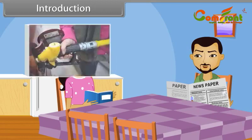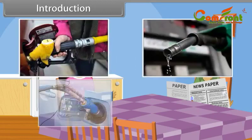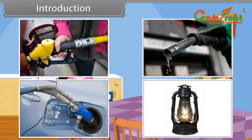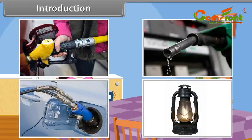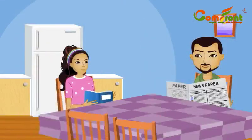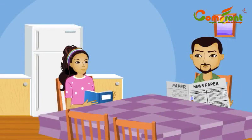We use kerosene oil for domestic use. Petrol, diesel and CNG are used in automobiles. All these fuels contain hydrocarbons. Isn't it interesting? Very interesting. Please tell me more about hydrocarbons. Sure, come let's start.